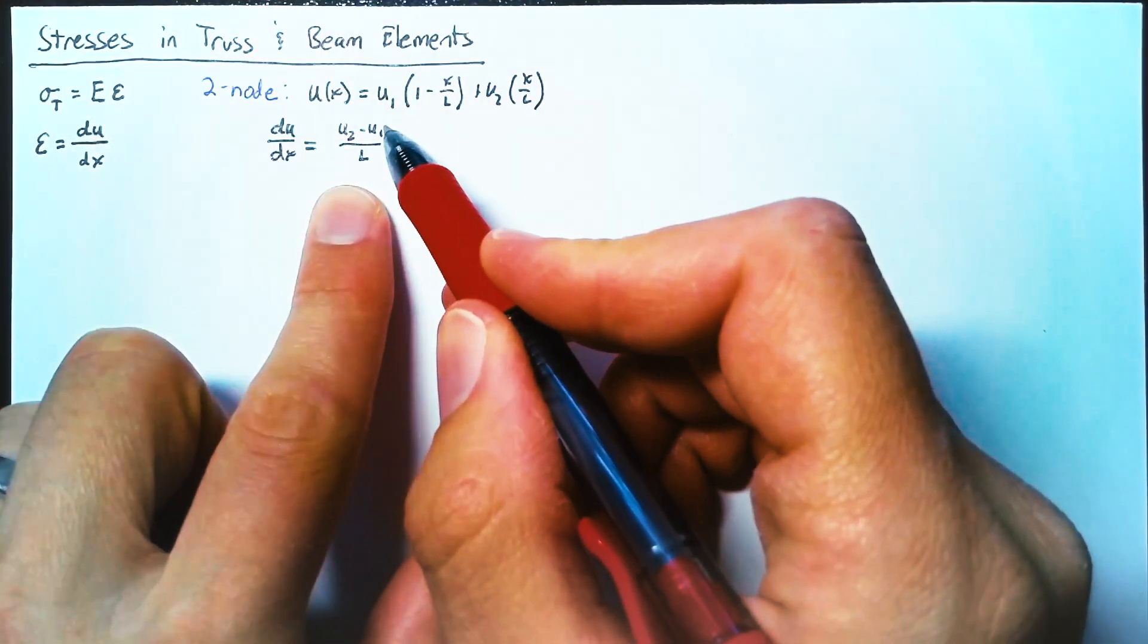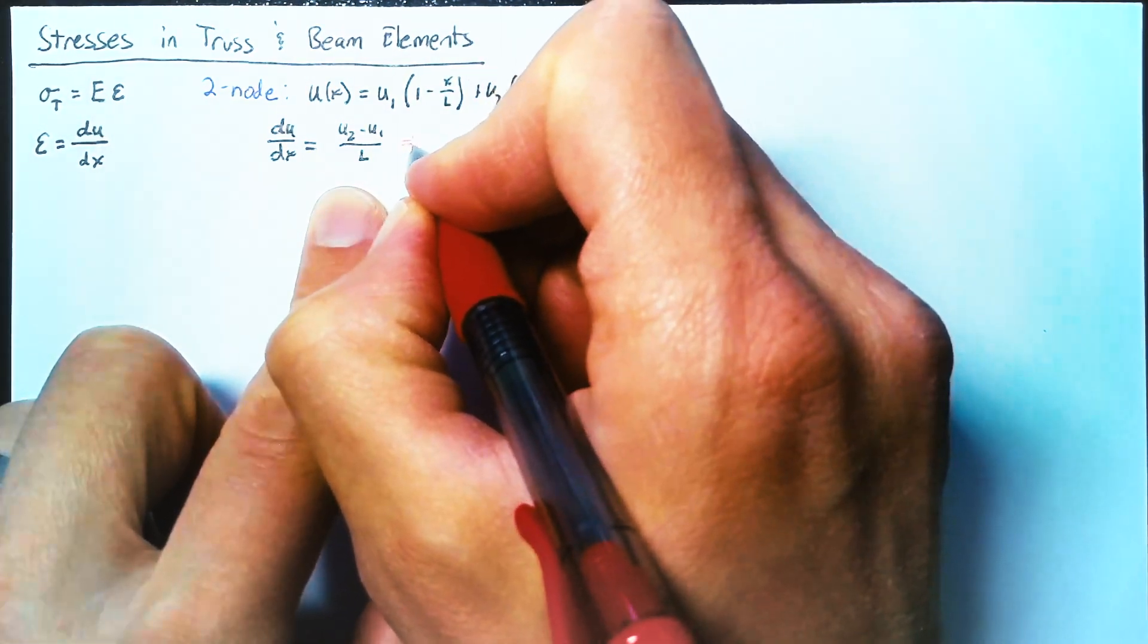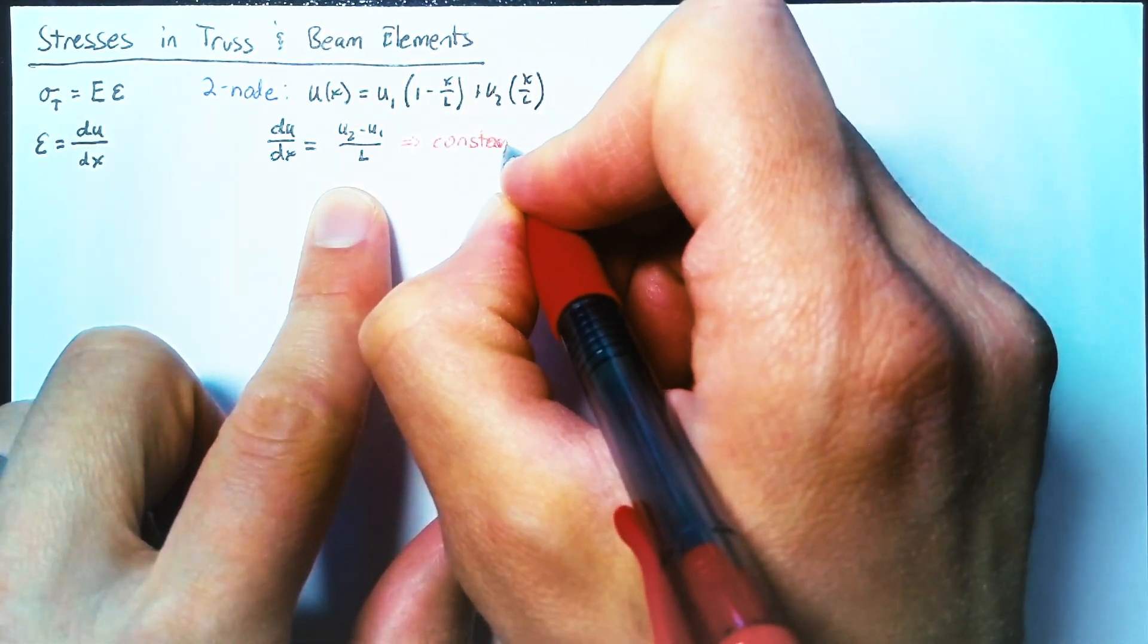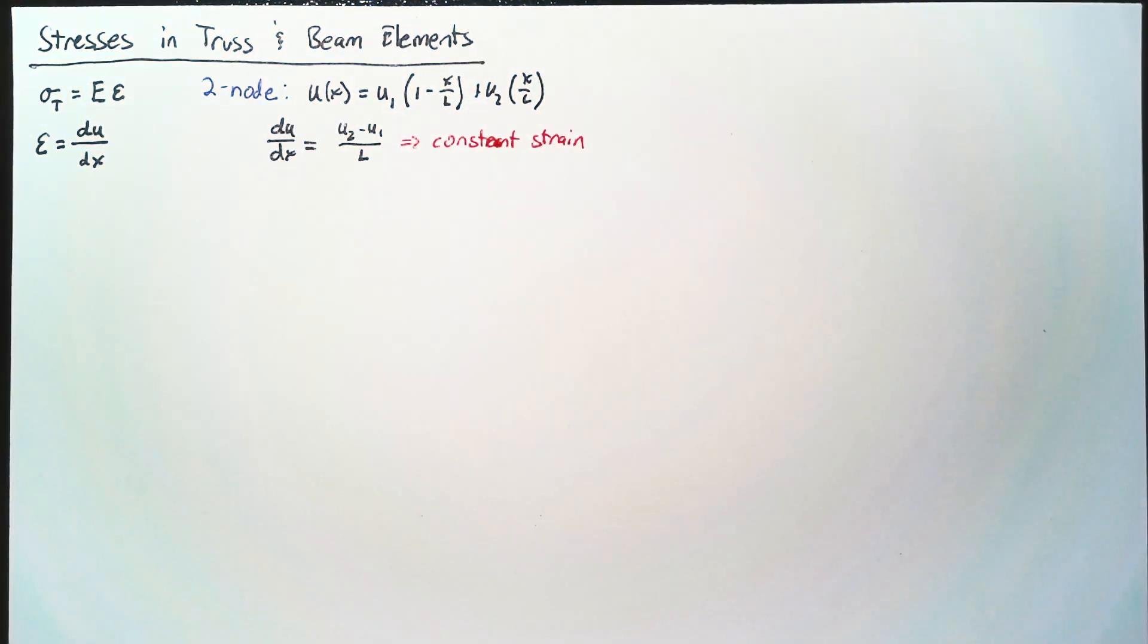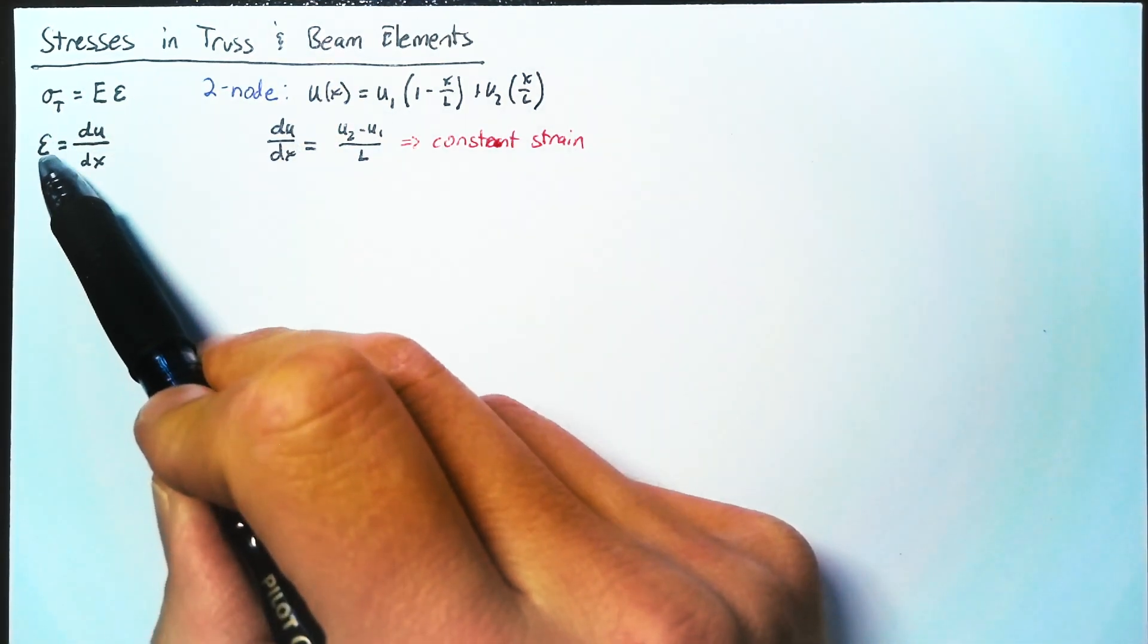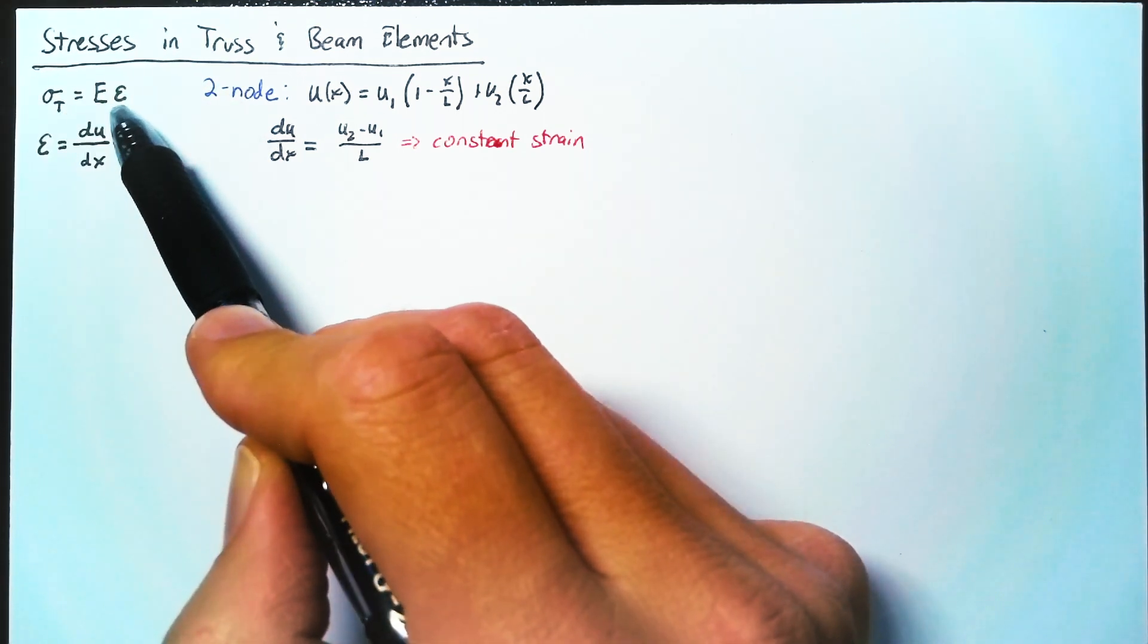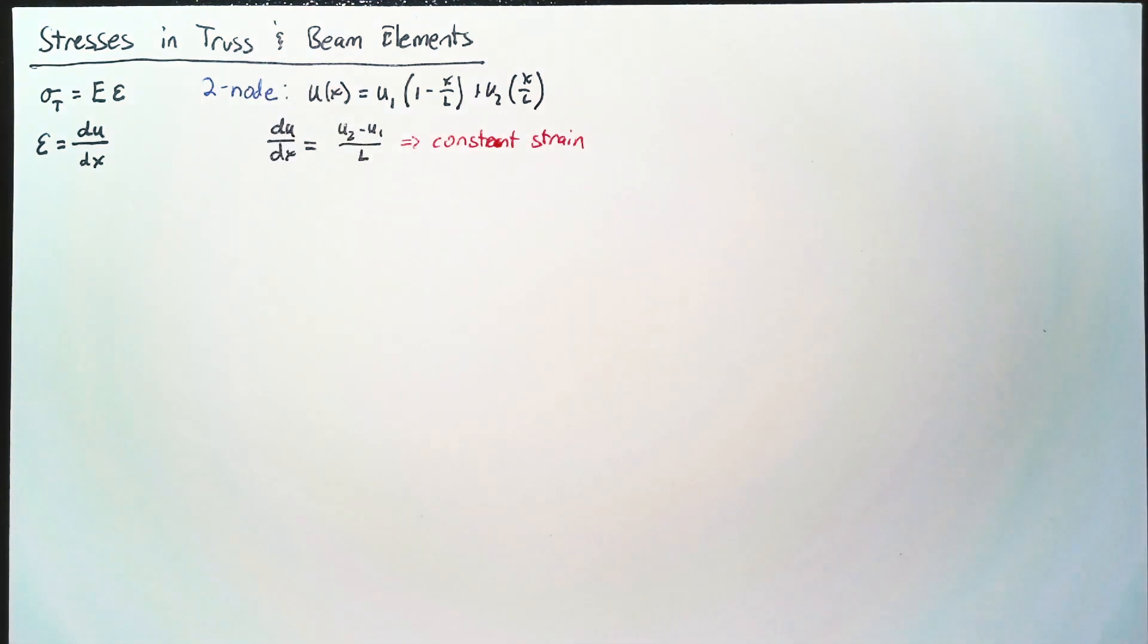Now, notice that there are no contributions from the position in this equation. So what this means is we have constant strain in our element. So once we have our displacements, we can just calculate for du dx, which is exactly epsilon. And then that strain goes into the Young's modulus equation up here, and we can solve for stress.